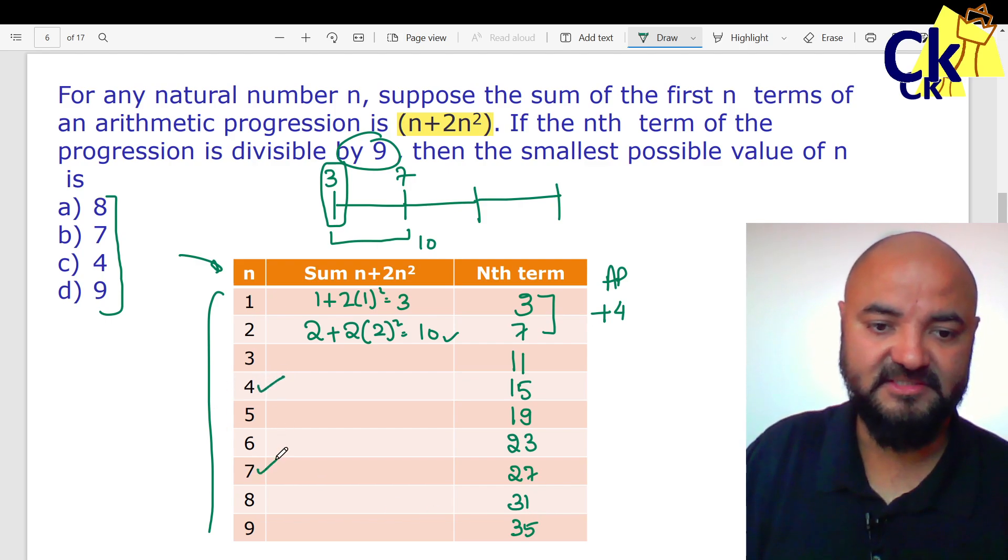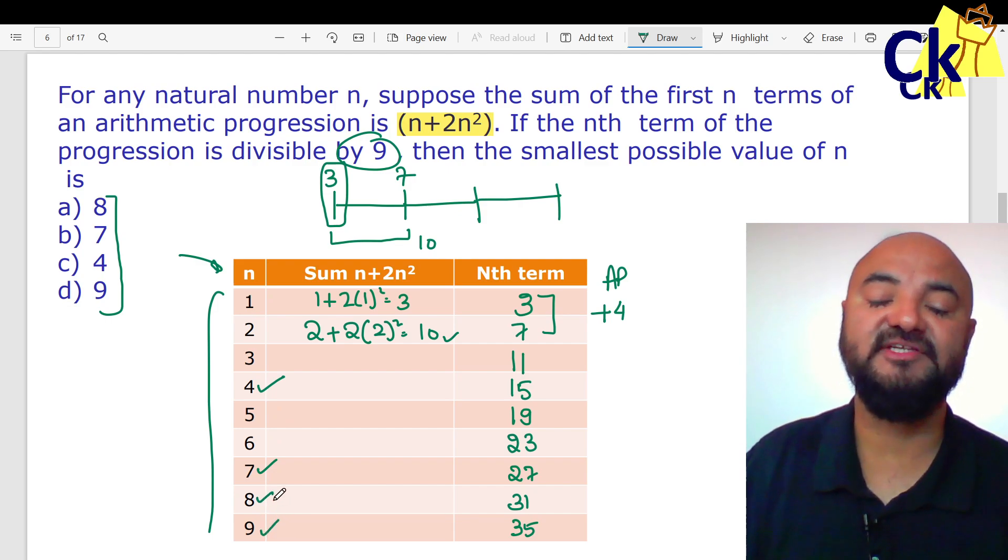Now can you find out whether 4th, 7th, 8th, or 9th - which term is multiple of 9 or divisible by 9? 27. That's it, bingo! Answer is 7.